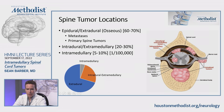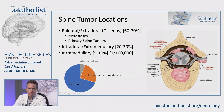The next most common is intradural extramedullary tumors, which are things like schwannomas or neurofibromas. These are inside the dural membrane — the thecal sac — but outside the actual parenchyma of the spinal cord, and these happen about 20-30% of the time. The least common, and what we're talking about today, are intramedullary spinal cord tumors, which are rare at about 5-10% of all spine tumors.